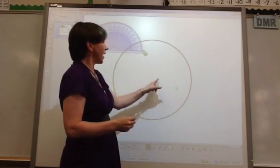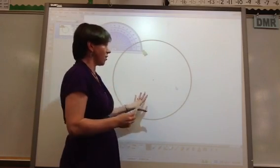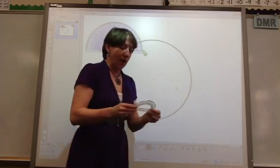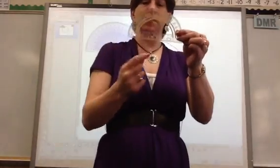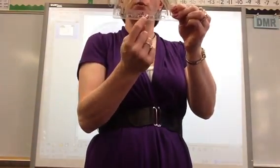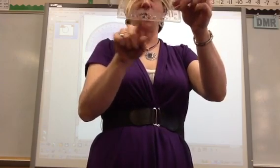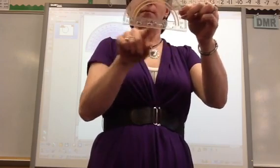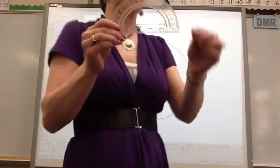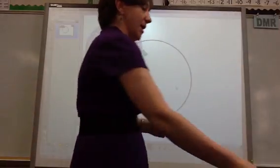Now, using the protractor, keep in mind this center point down here is what you're going to use to line everything up from the center of your circle. You're going to use this to match up with the radius on your circle.